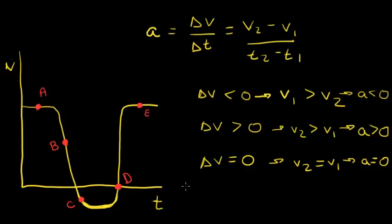Now let's take a look at our graph and evaluate what is happening with the change in velocity at each point. At point A, the easiest way to do this is to draw a tangent line. At point A, if we draw a tangent line, we can see that the initial velocity is the same as the final velocity. So the change in velocity is equal to zero, meaning that our acceleration in this case will also be zero.